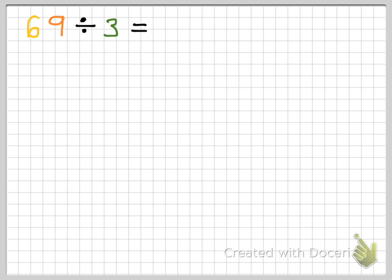We'd show it like this. So, we count 3 down: 1, 2, 3. And now I need to go 69 squares. I know 10 times 3 would be 30 squares, so if I went 10 across, that would be 30 squares if I turn that into a rectangle. But I want 69, so I'm going to go another 10, which will be 60. So, that's 60 right there.